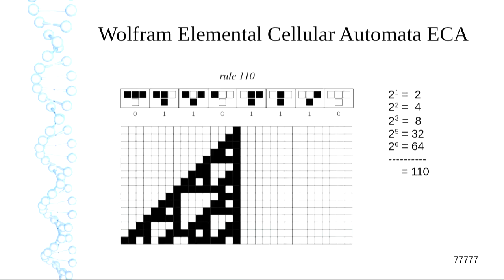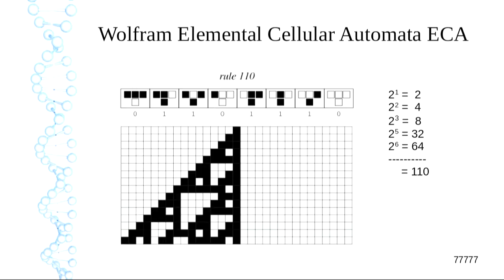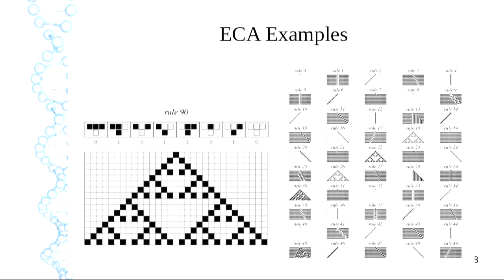Some rules are left-right homologues of each other — for example rule 136 is just rule 110 going the other way. Look at rule zero at the top: it does nothing because everything is zero. Rule 256 makes everything black. Those are class one machines — they don't do anything at all.